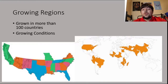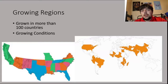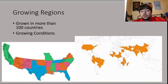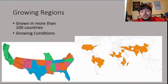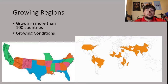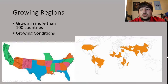Cotton is grown in more than 100 different countries around the world, making deciding a specific growing region hard to say, from Africa to Asia to America. Some of the growing conditions for cotton include long vegetation periods, constant warm temperatures, ample sunlight and dry conditions, and deep well-drained soil with nutrients, which is why we see a lot of it near the equator because of warmer temperatures and longer daylight.